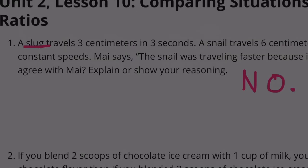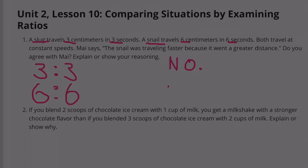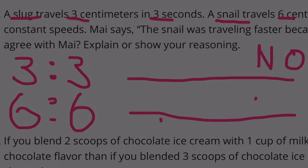No, I don't agree. The slug traveled 3 centimeters in 3 seconds. That's a 3 to 3 ratio. The snail traveled 6 centimeters in 6 seconds. That's a 6 to 6 ratio. These are actually equivalent ratios.